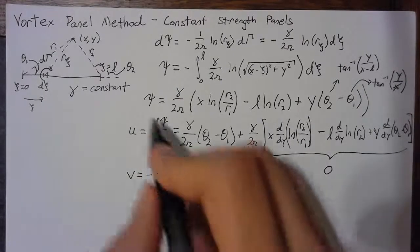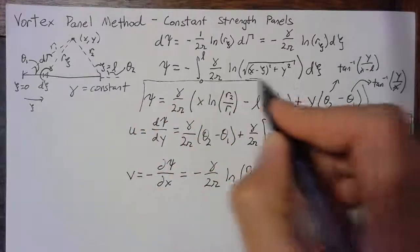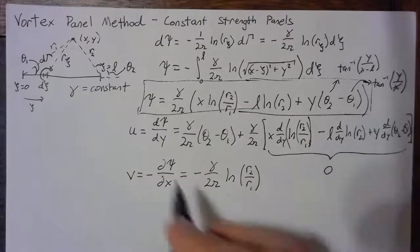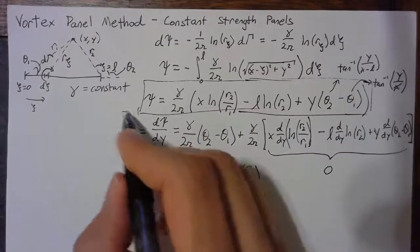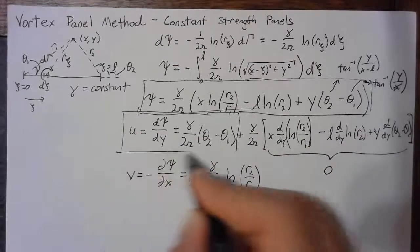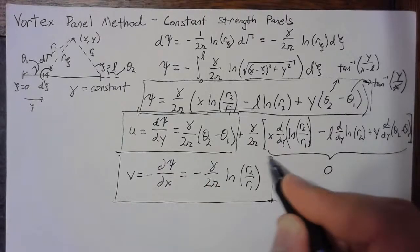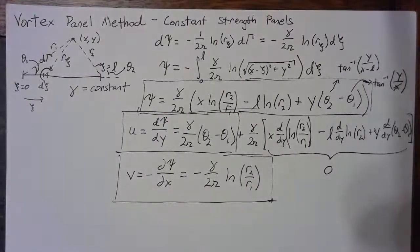The bottom line is that we end up with a term for psi, our stream function, and we end up with values for our u and v, which is everything for our constant panel. Thank you.